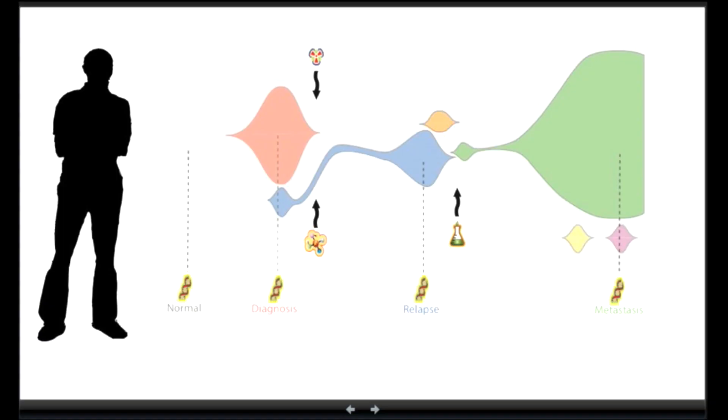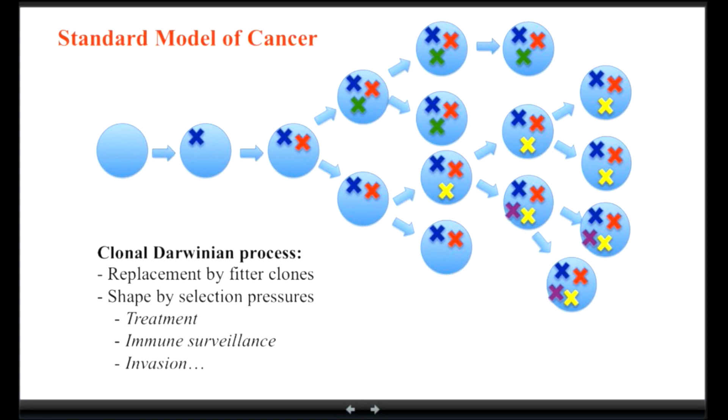So, this is what I call the standard model of cancer. This is how we understand how cancer evolved. The time is running from left to right, again here. And there is a normal cell. This is the blue ball that is on the left. And there are random mutations that happen. Most of our cells, they have mutations that happened.